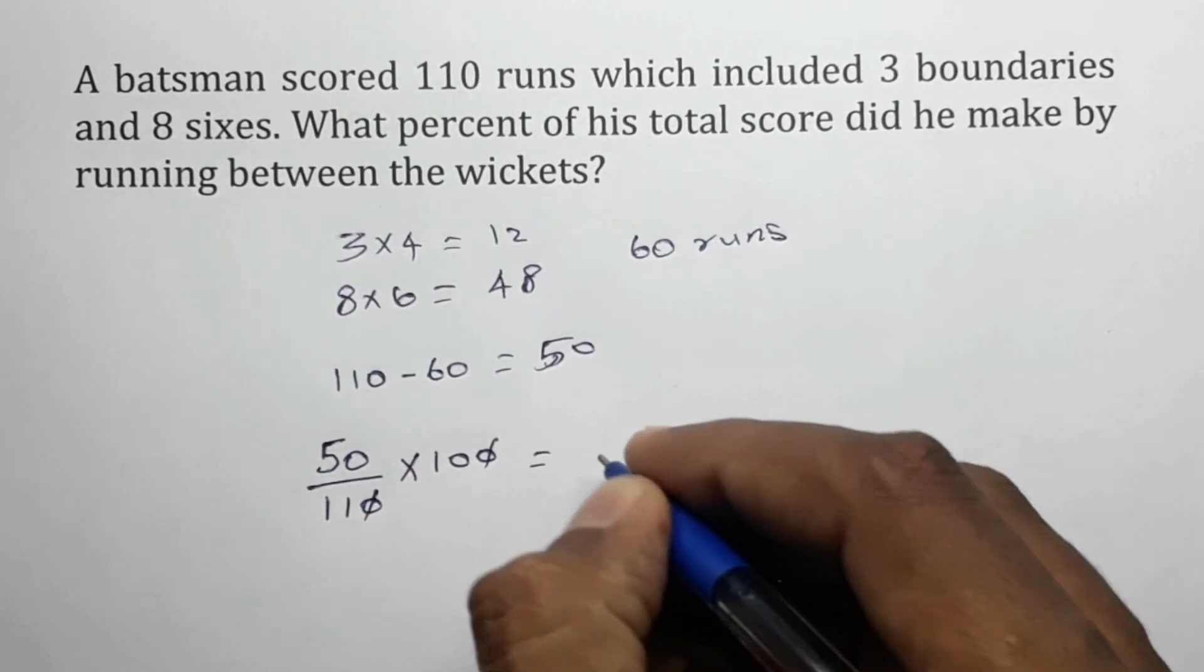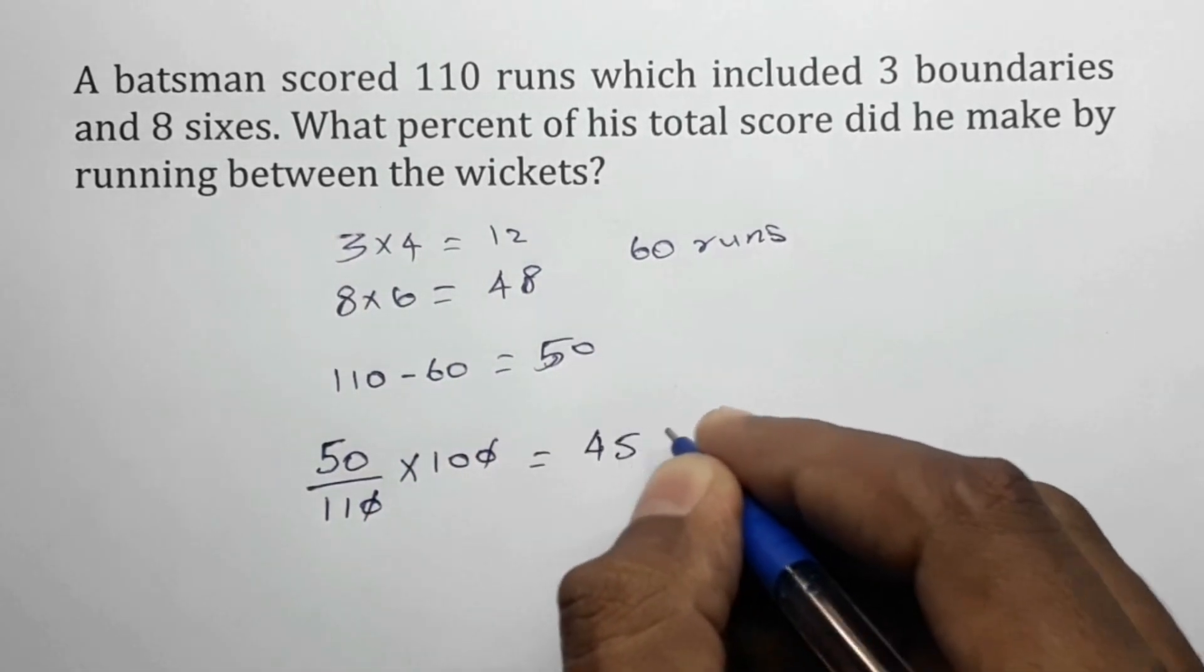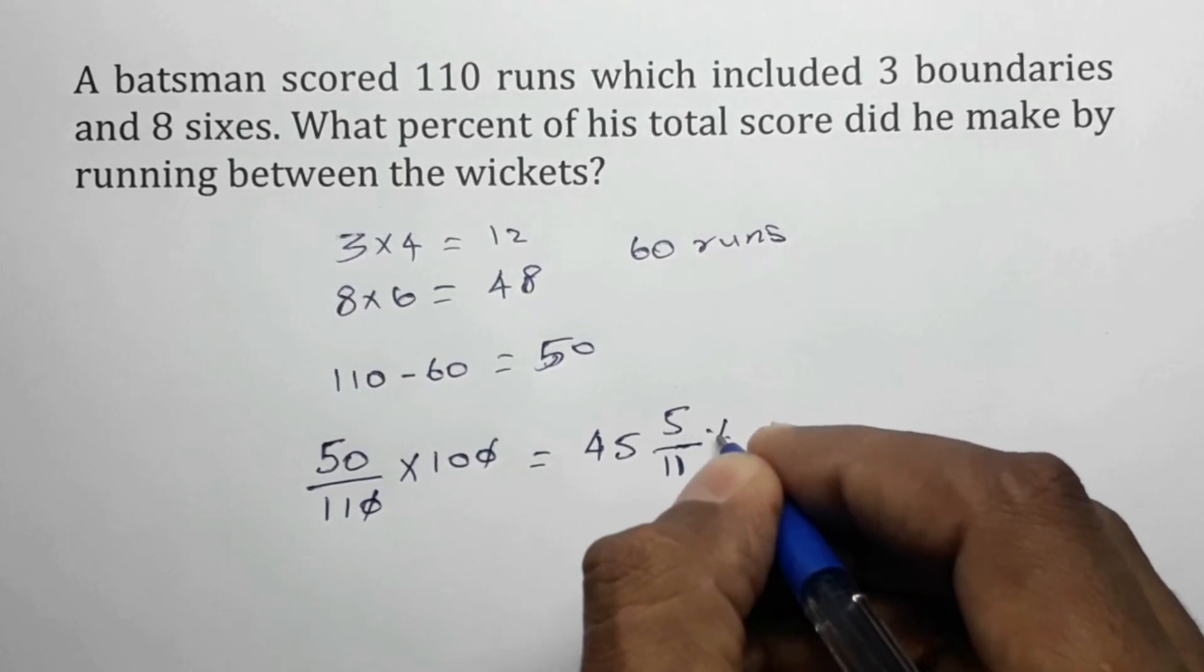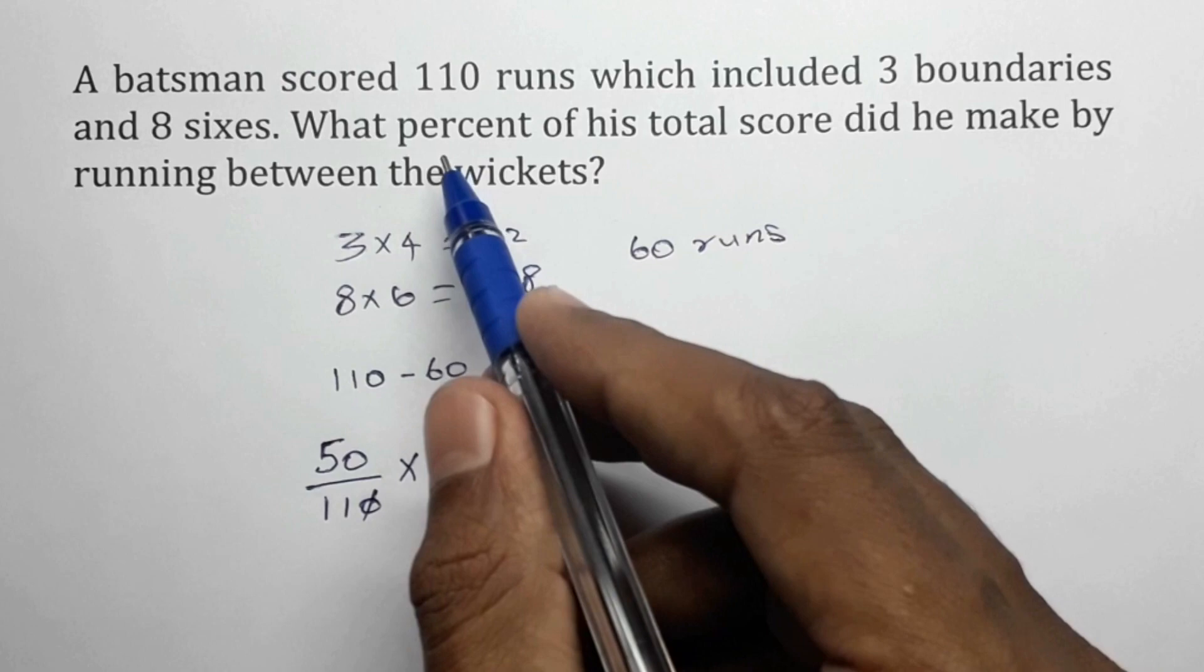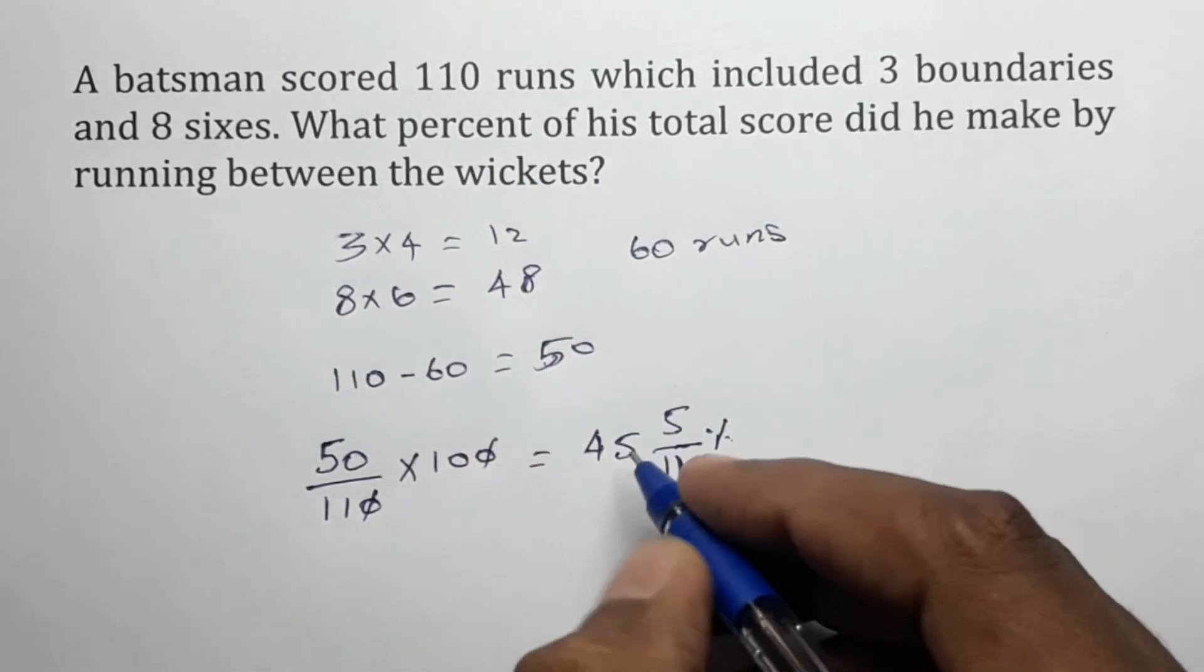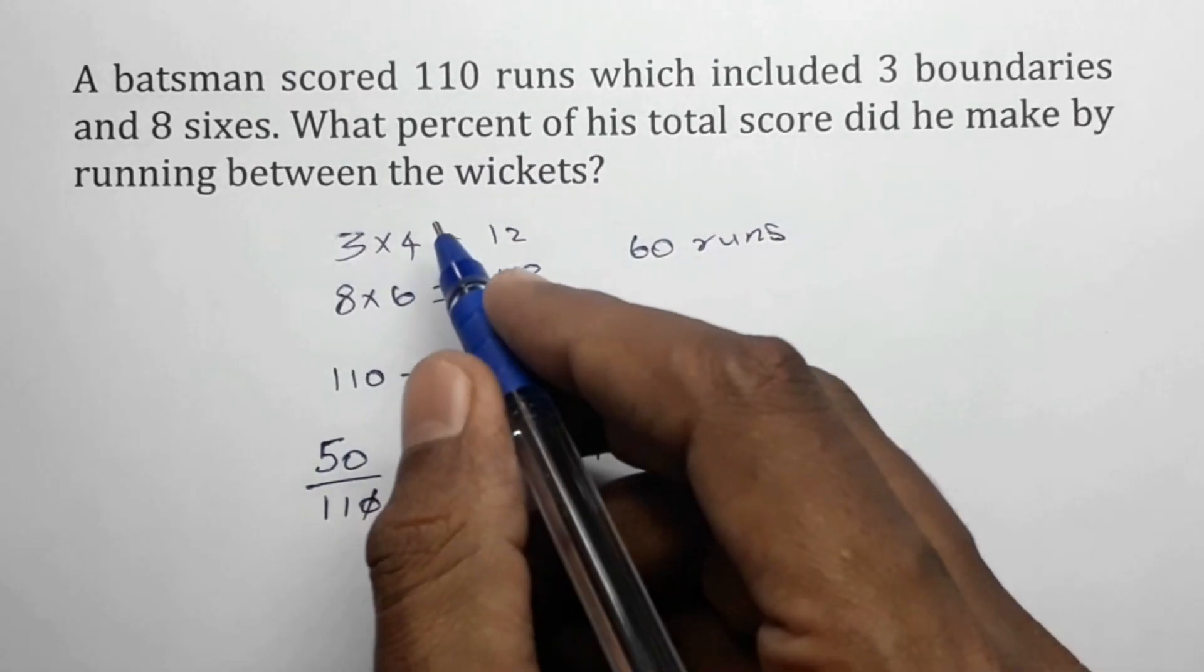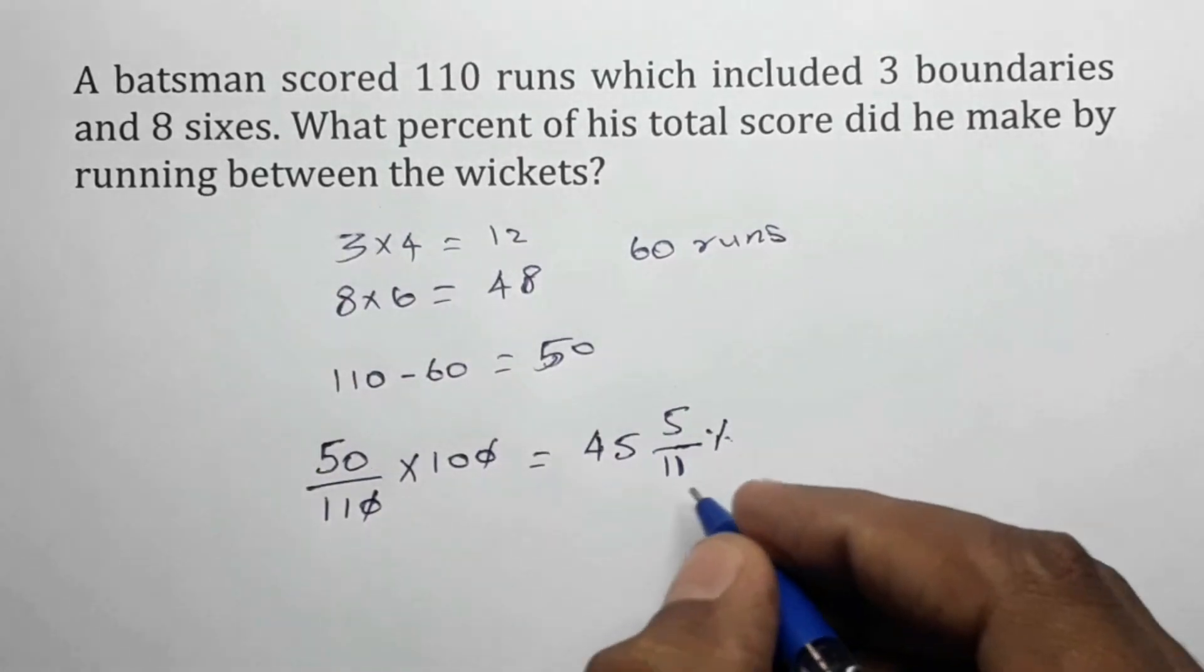By solving we get 45 5/11 percent as the answer. So the batsman scored 45 5/11 percent of his runs by running between the wickets.